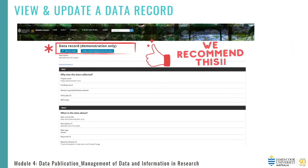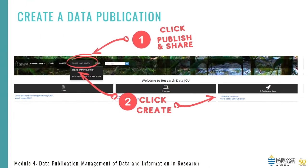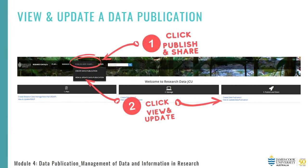We strongly recommend you go back and update your data record before creating a data publication. Once you are in your data record, you have the option to further edit by clicking 'edit this record'. Or if you are happy to proceed, simply click 'create a data publication from this record' and you will find yourself in a data publication. Alternatively, you can also create a data publication by clicking 'create data publication', but you will then be required to manually link the data publication to your existing data record. You can at any stage go back to view and update a data publication before you finalise your record and submit for publication.